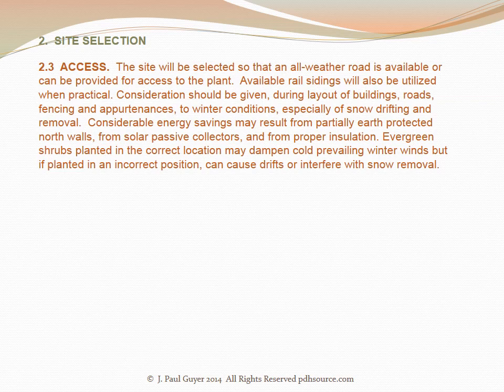Available rail sidings will also be utilized when practical. Consideration should be given during layout of buildings, roads, fencing, and appurtenances to winter conditions, especially snow drifting and removal. Considerable energy savings may result from partially earth-protected north walls, from solar passive collectors, and from proper insulation. Evergreen shrubs planted in the correct location may dampen cold prevailing winter winds, but if planted in an incorrect position can cause drifts or interfere with snow removal.